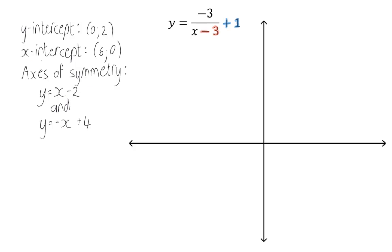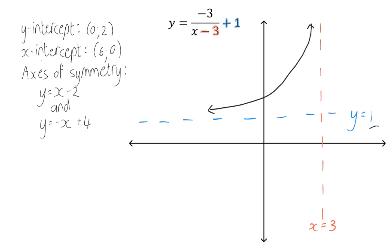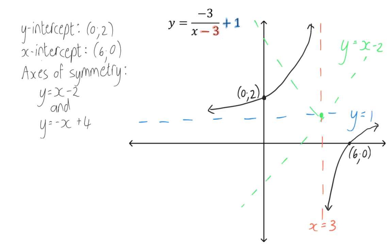Now we can draw the sketch. First, we draw the two asymptotes. Then we draw the two parts of the hyperbola in the second and fourth quadrants, remembering the graph approaches but never touches the asymptotes. The y-intercept is at (0, 2) and the x-intercept at (6, 0). Finally, we draw the two axes of symmetry intersecting at the point where the asymptotes cross: y equals x minus 2 with a positive gradient, and y equals minus x plus 4 with a negative gradient. And here we have our complete sketch.